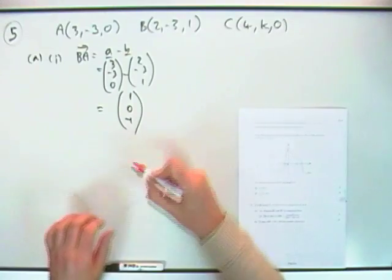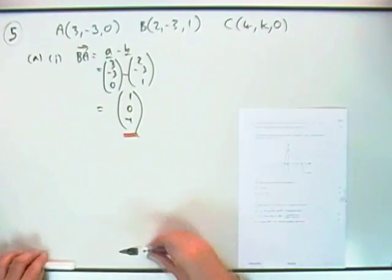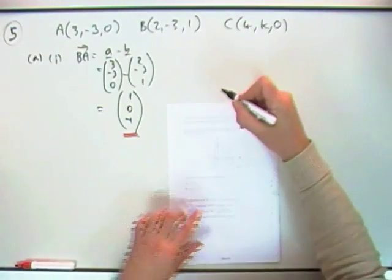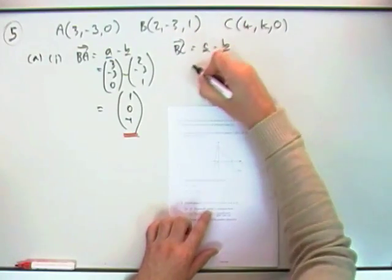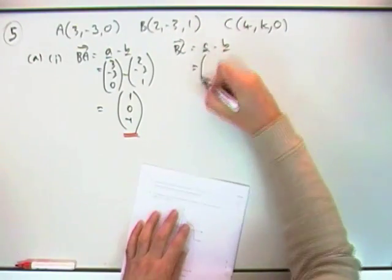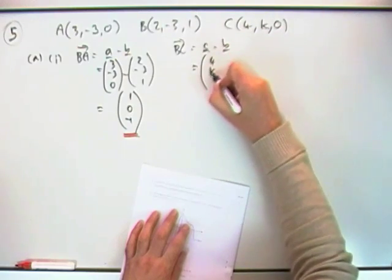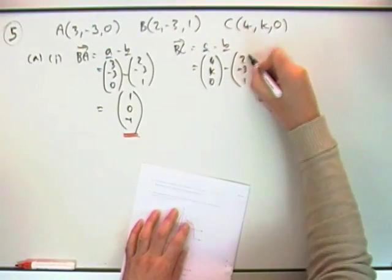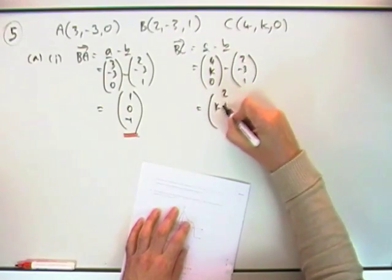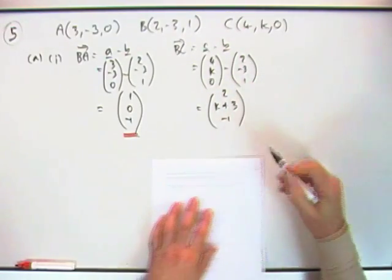And then what's the other one, BC? BC is going to be C take away B, so that's going to be (4,k,0) take away B which was (2,-3,1). So that's going to be (2, k+3, -1).